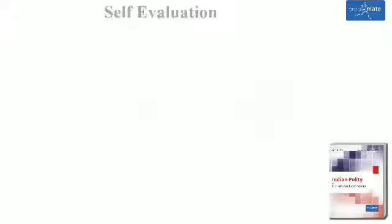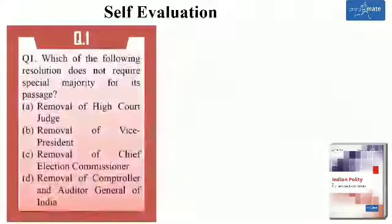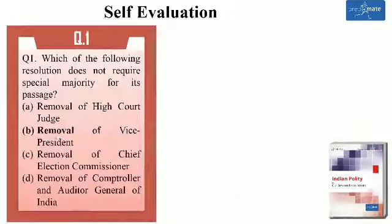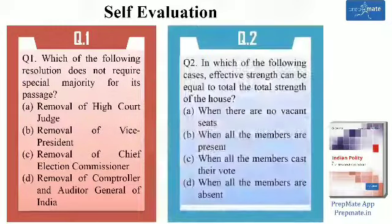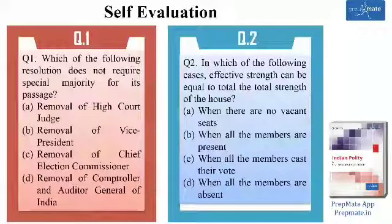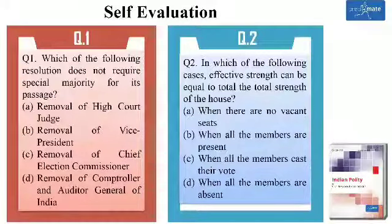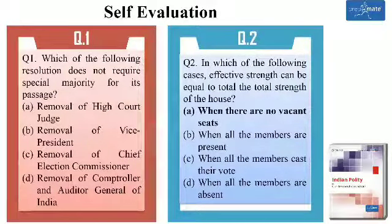Let us evaluate ourselves. Question 1: Which of the following resolutions does not require special majority for its passage? Removal of Vice President — the Vice President is also Chairman of Rajya Sabha. We have learned that presiding officers can be removed by effective majority. Question 2: In which of the following cases can effective strength be equal to the total strength of the house? When there are no vacant seats — in that case the total strength is equal to the then-members of the house. So option A is the correct answer.